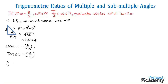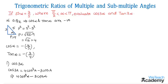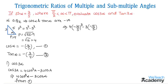Now let us evaluate the value of cos 3α. Using the multiple angle formula: cos 3a = 4cos³a − 3cos a. Substituting the value of cos α (equation 1), we get: cos 3α = 4(−4/5)³ − 3(−4/5).